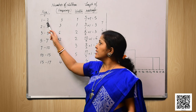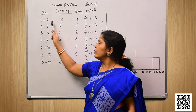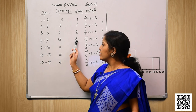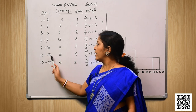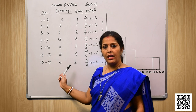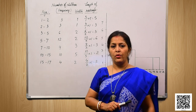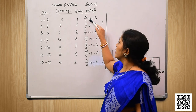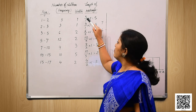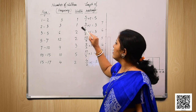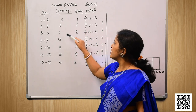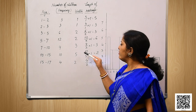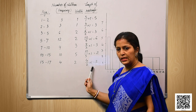The ages are: 1 to 2, 2 to 3, 3 to 5, 5 to 7, 7 to 10, 10 to 15, and 15 to 17. The widths are not the same: 1 to 2 has width 1, 2 to 3 is width 1, 3 to 5 is 2, 5 to 7 is 2, 7 to 10 is 3, 10 to 15 is 5, and 15 to 17 is 2. To maintain uniformity of rectangles we use the formula: frequency divided by width, multiplied by 1. This gives adjusted heights of 5, 3, 3, 6, 3, 2, and 2 respectively.